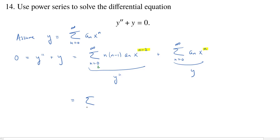I rewrite by increasing all n's by 2, replacing n with n+2. That gives (n+2)(n+1) a_{n+2} x^(n+2−2) = x^n. The rule of thumb is: if you increase n by something, decrease the index by that same amount. Checking: the first nonzero term was at n=2, giving x^0, so the new index starts at 0. The y term doesn't change.